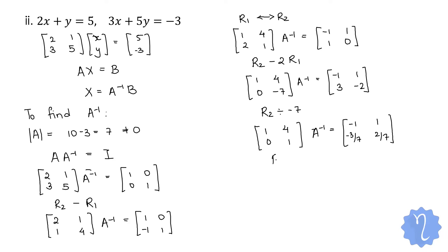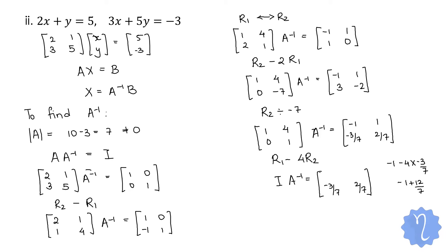Last step: R1 − 4·R2 to get the identity. We get −1 + 12/7 = 5/7, and 1 − 8/7 = −1/7. So A⁻¹ = [5/7, −1/7 / −3/7, 2/7]. You can see this method is longer — the adjoint method is better and gives the answer more quickly.